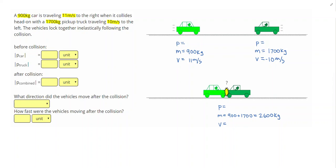I can use the equation momentum equals mass times velocity and figure out the initial momentum of the car and the truck. If I do 11 times 900, I get 9900 kilogram meters per second. And that's my first answer, 9900 kilogram meters per second. For the truck, I get 1700 times negative 10, which gives me negative 17,000 kilogram meters per second.